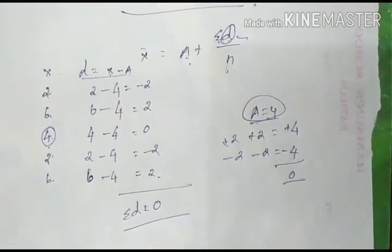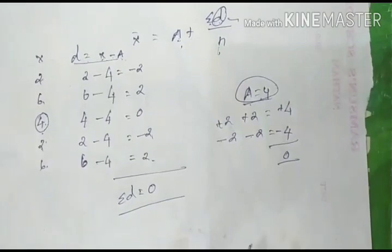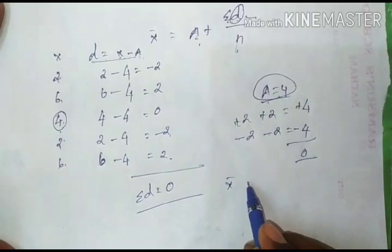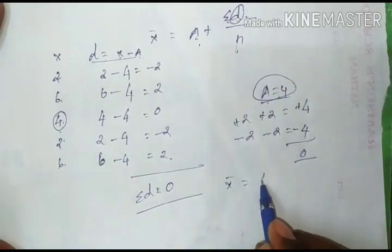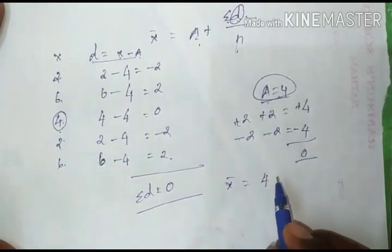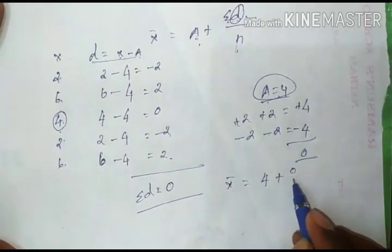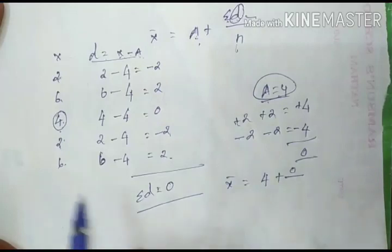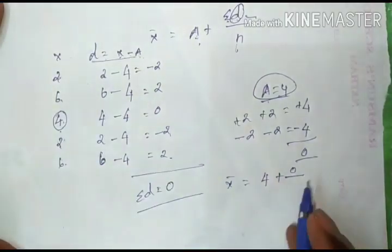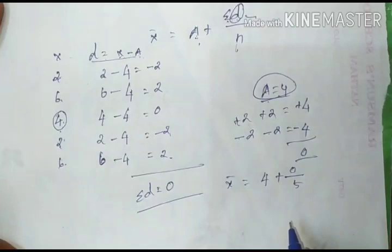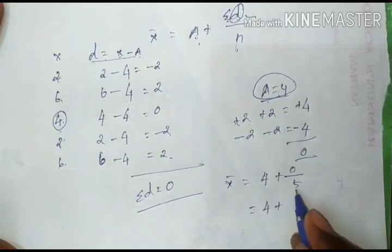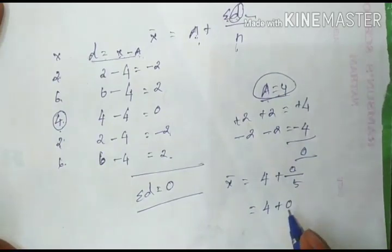Now let's apply the formula. x̄ = a + Σd ÷ n. Here a = 4, Σd = 0, and the number of values n = 5. So x̄ = 4 + 0 ÷ 5 = 4 + 0 = 4. The answer is 4. This is the shortcut method — same answer as the direct method.